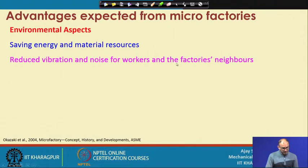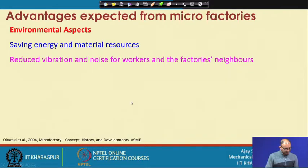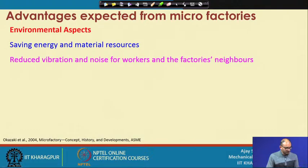Reduced vibration and noise for workers and factory neighbors is also an advantage. If your machine is very small, vibration and noise are mostly related to moving components. Since our operation is done by very small motors and everything, your noise level will be very low compared to bigger machines. Vibration is obviously low because we use very small components and are machining on a small component, though vibration from outside sources may create some problems. Unlike old, heavy machines, micro factories do not create noise and vibration to nearby places.